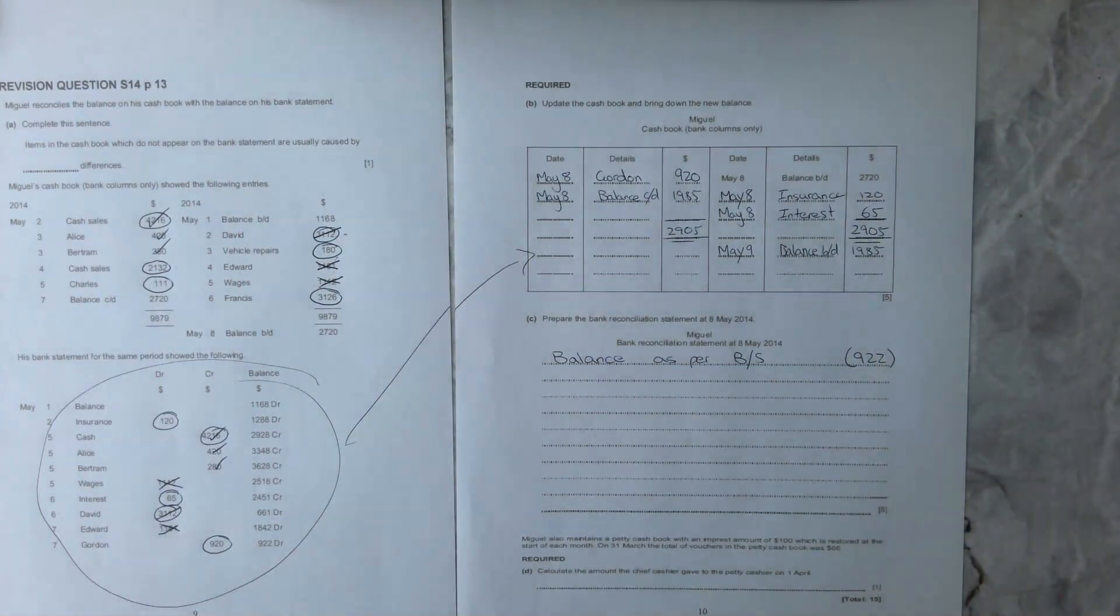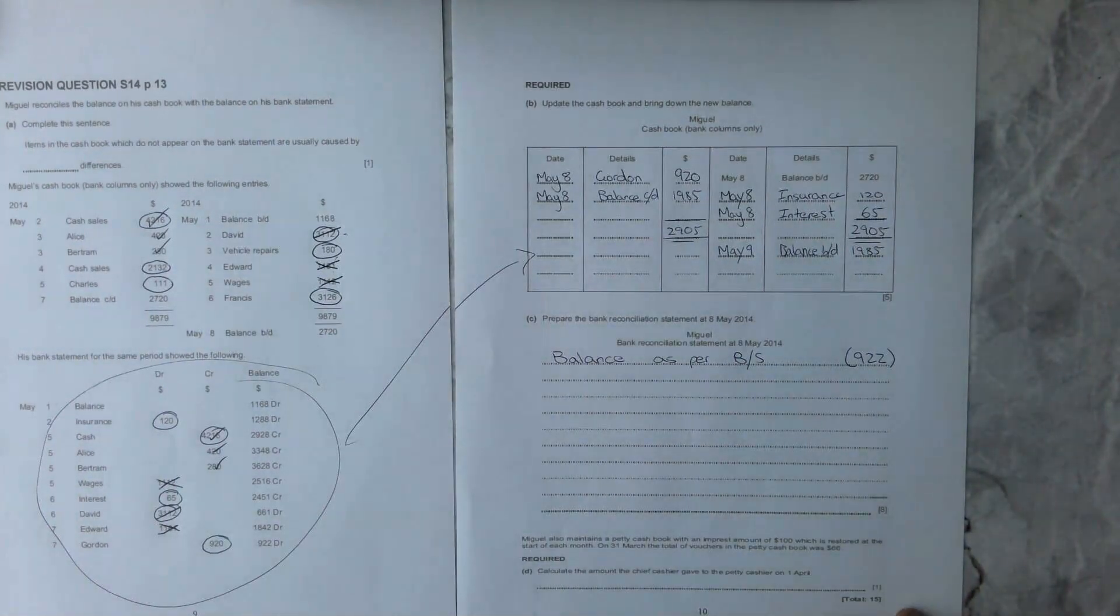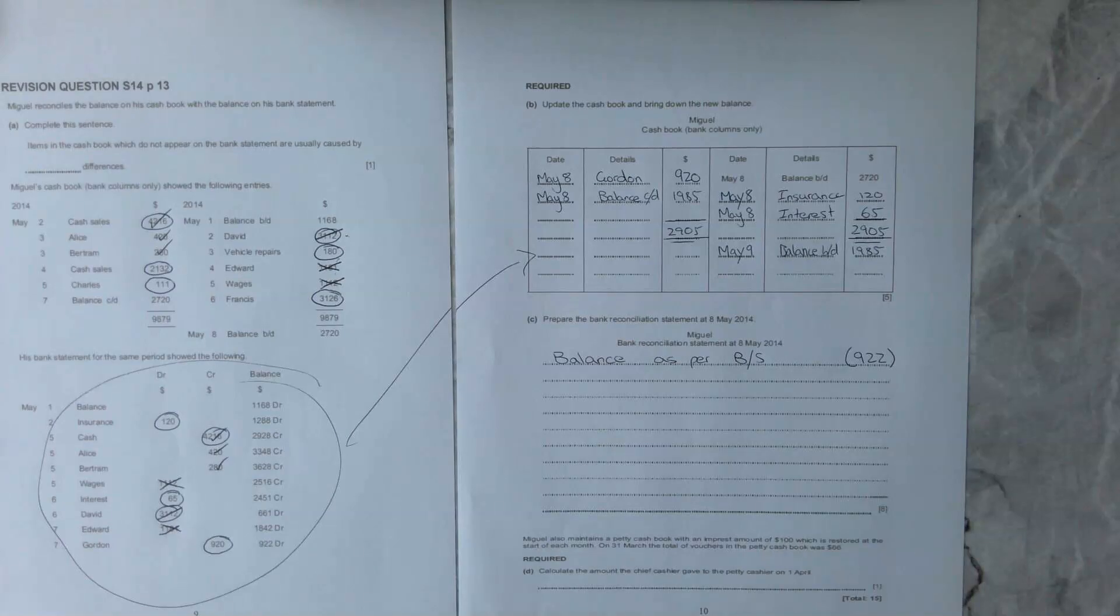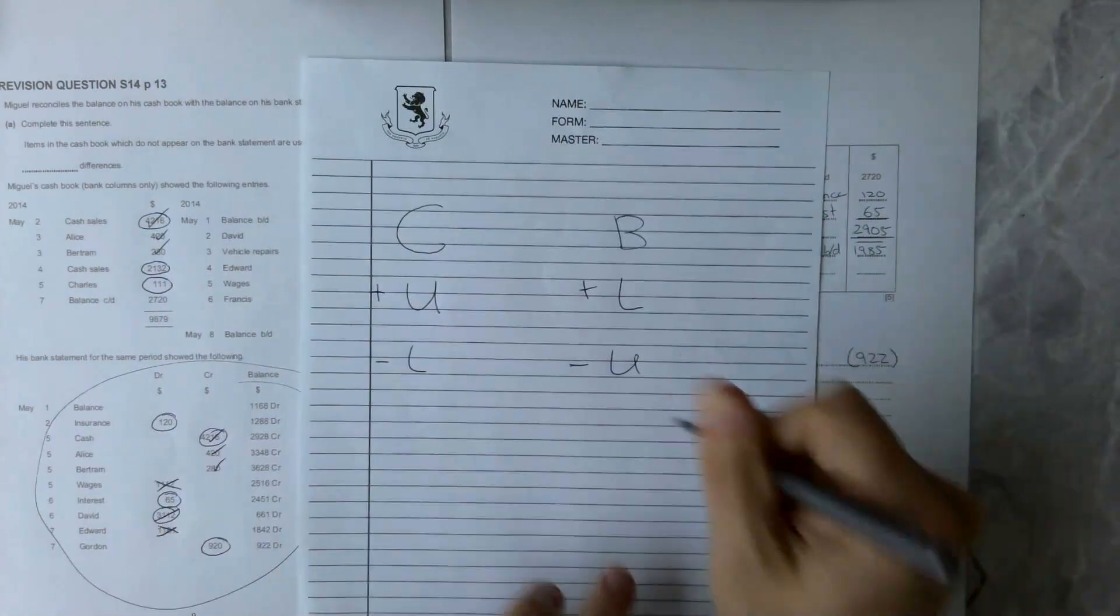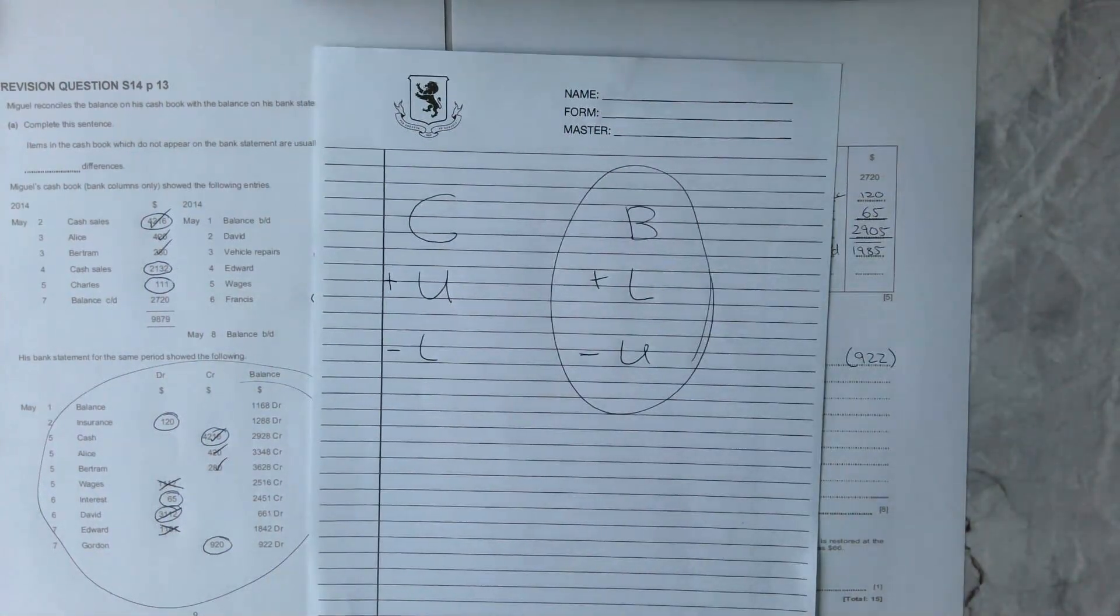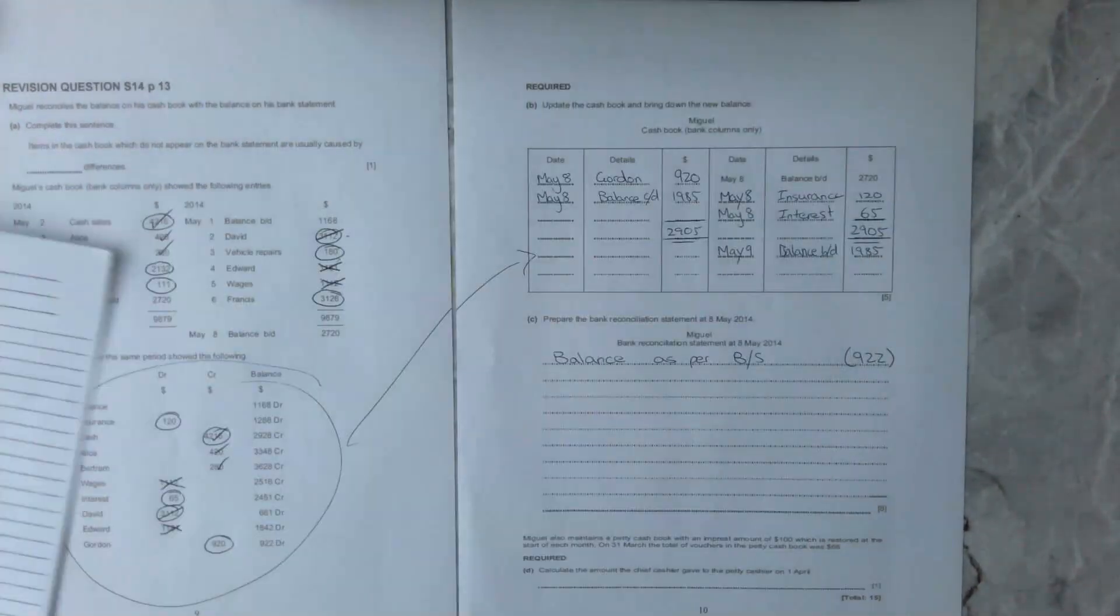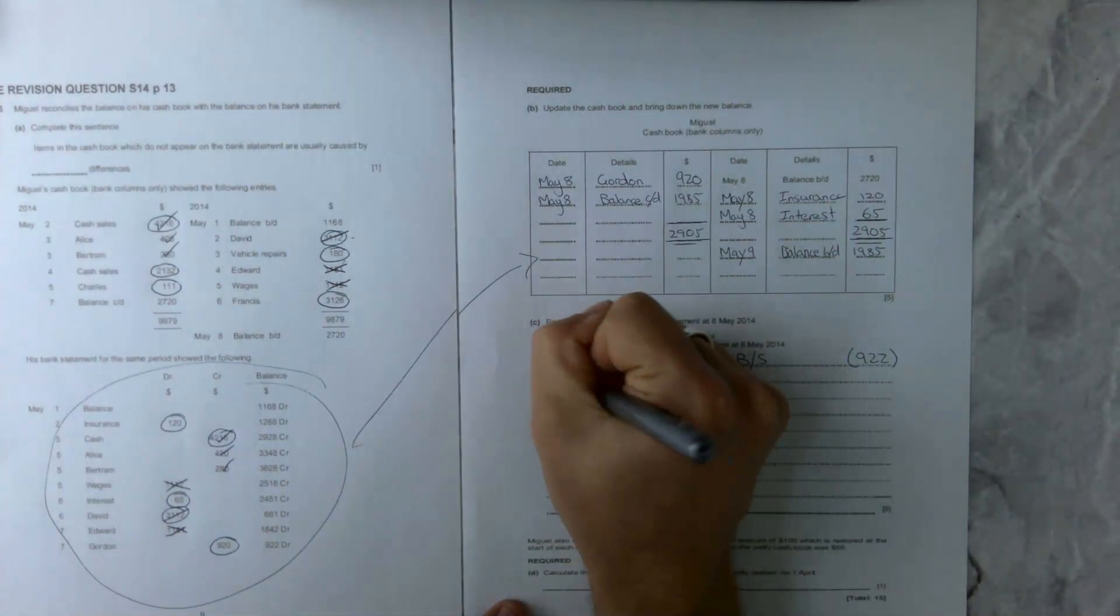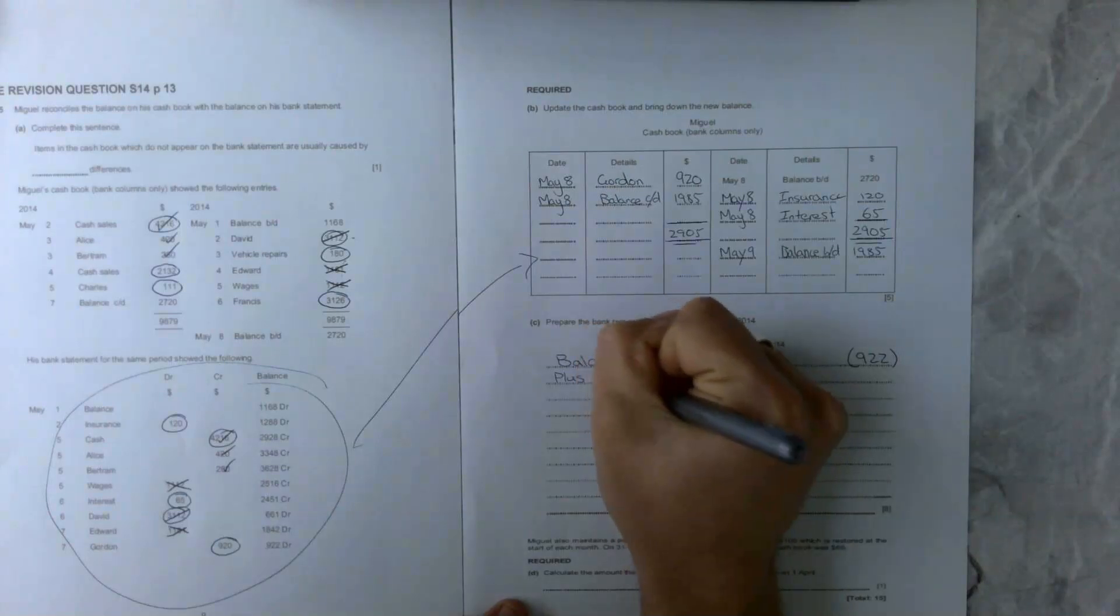You guys may be thinking, our bank account having a debit balance? Yes, that is unusual, it does mean we are in overdraft. So what we're going to put is it in brackets, 922, because currently we are in overdraft. Because we are doing our balance as per our bank statement, we are going to be doing BLUE today, so we're going to plus our lodgements and minus our unpresented checks.